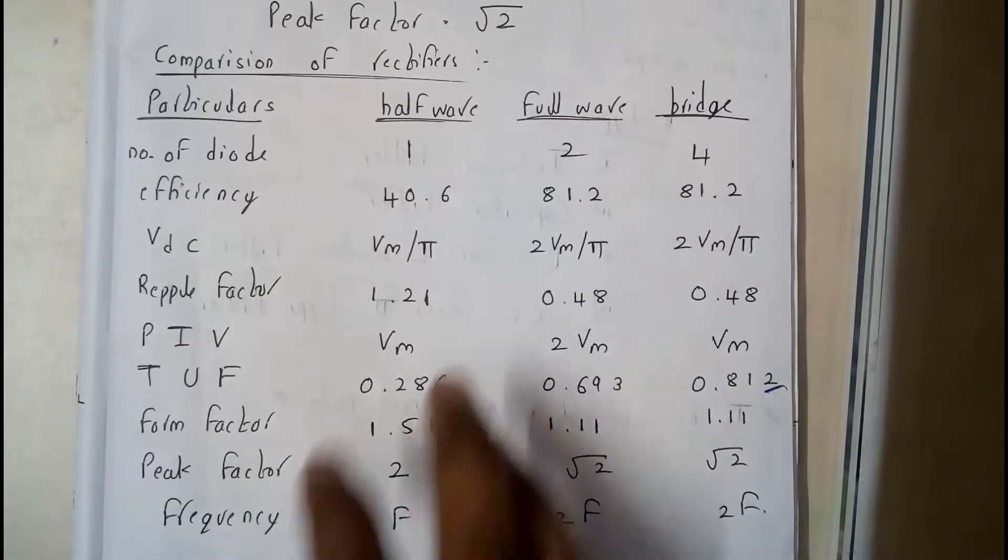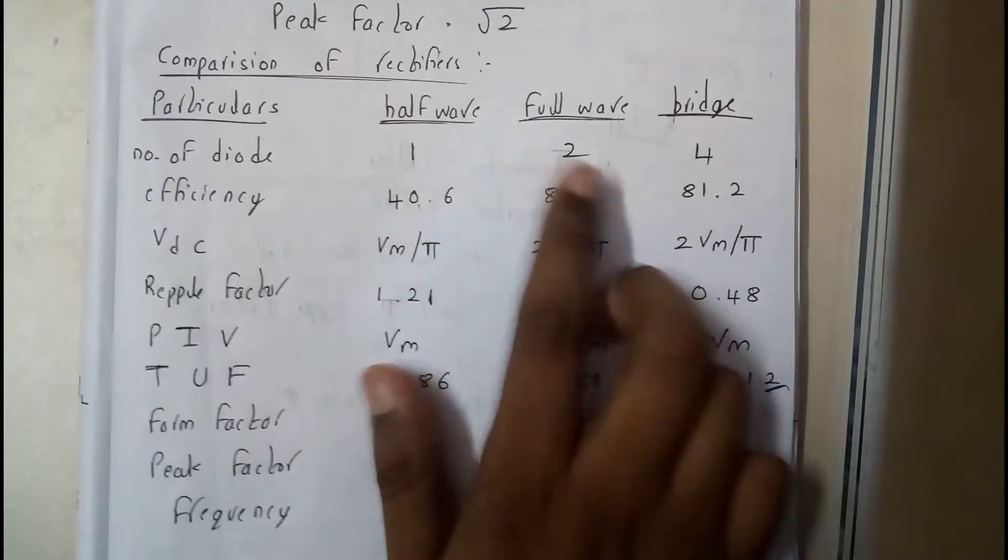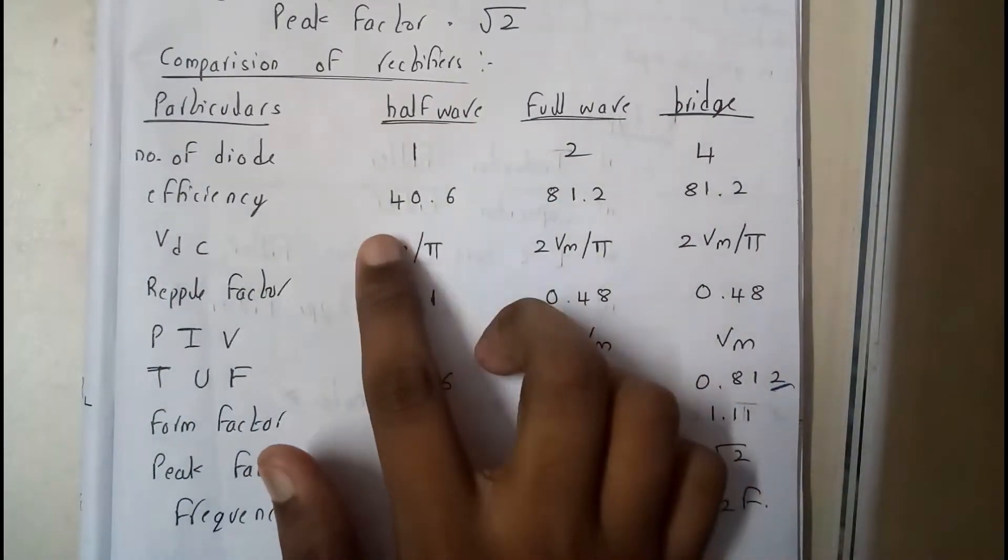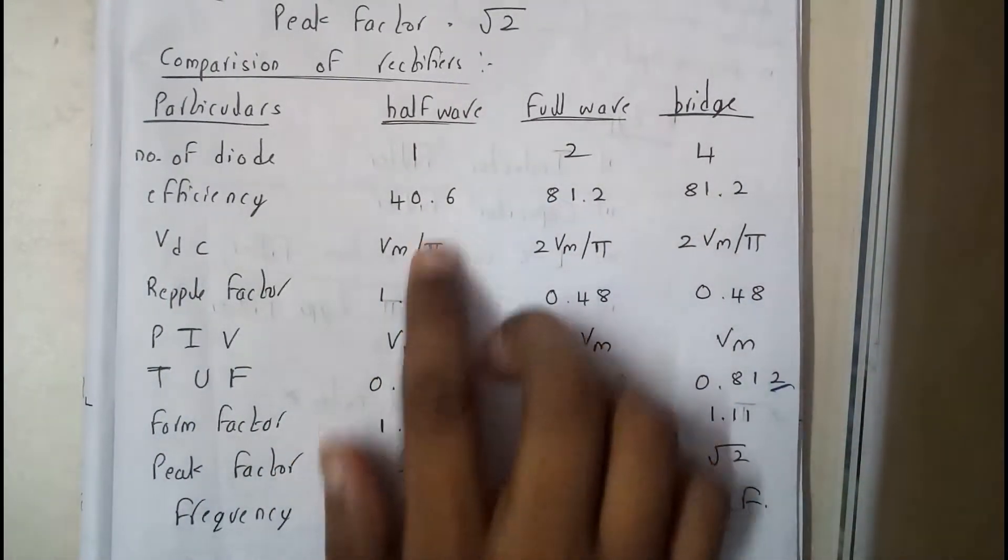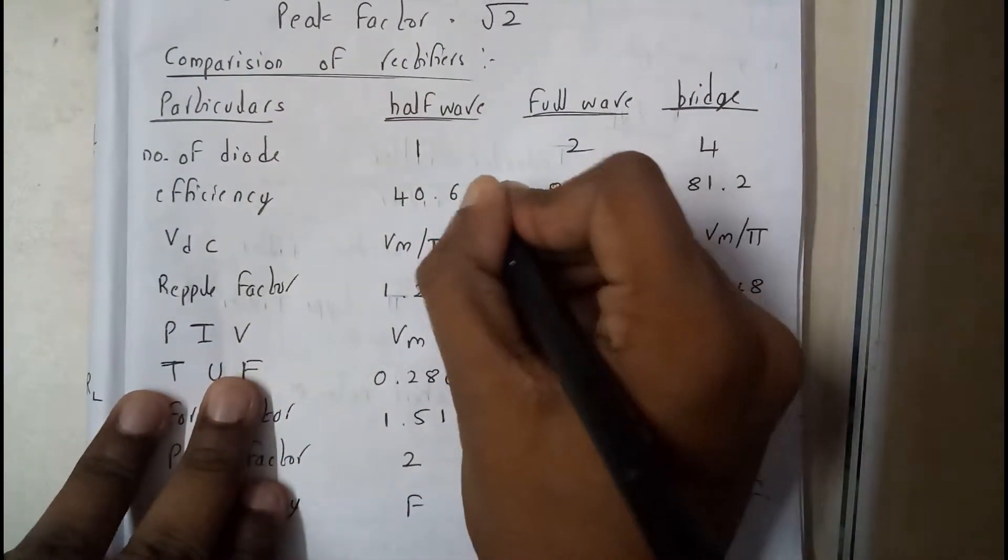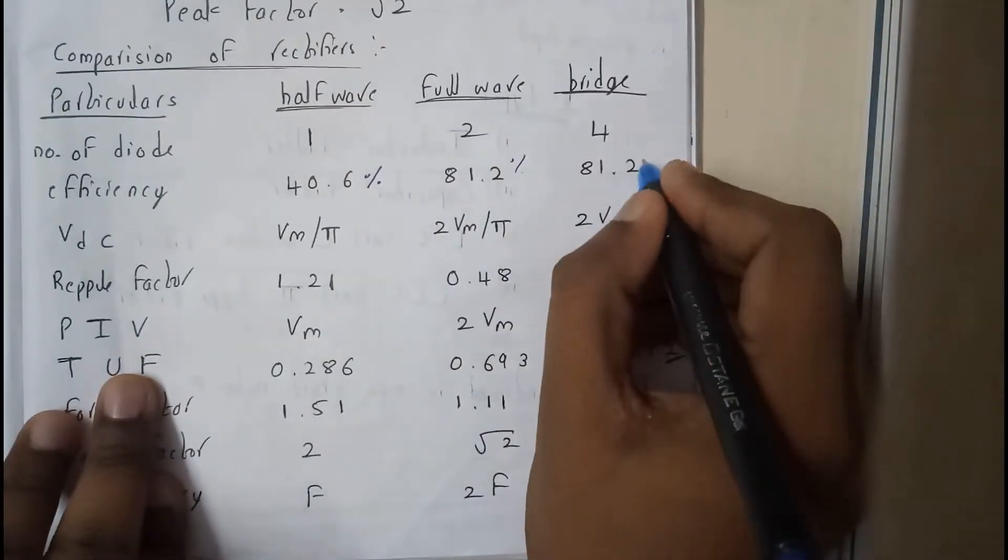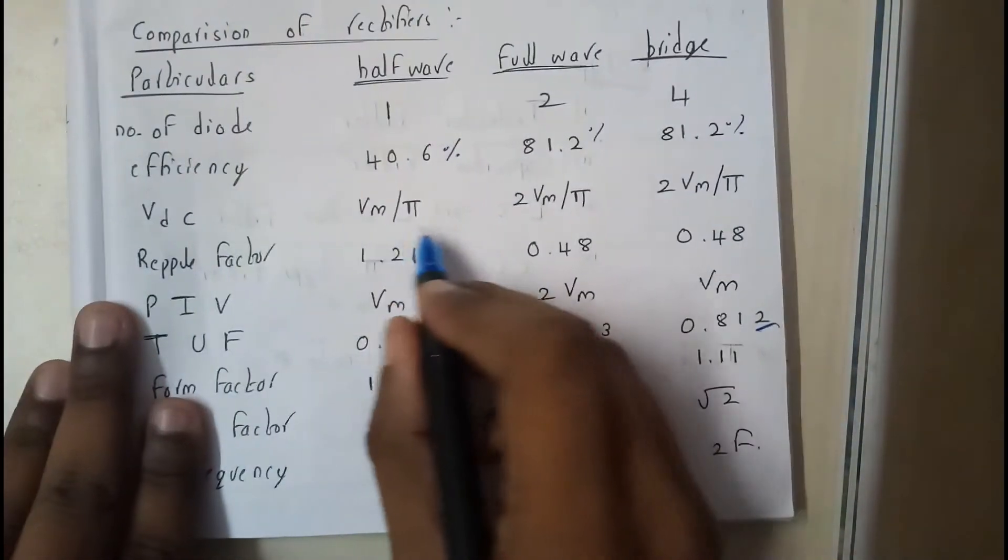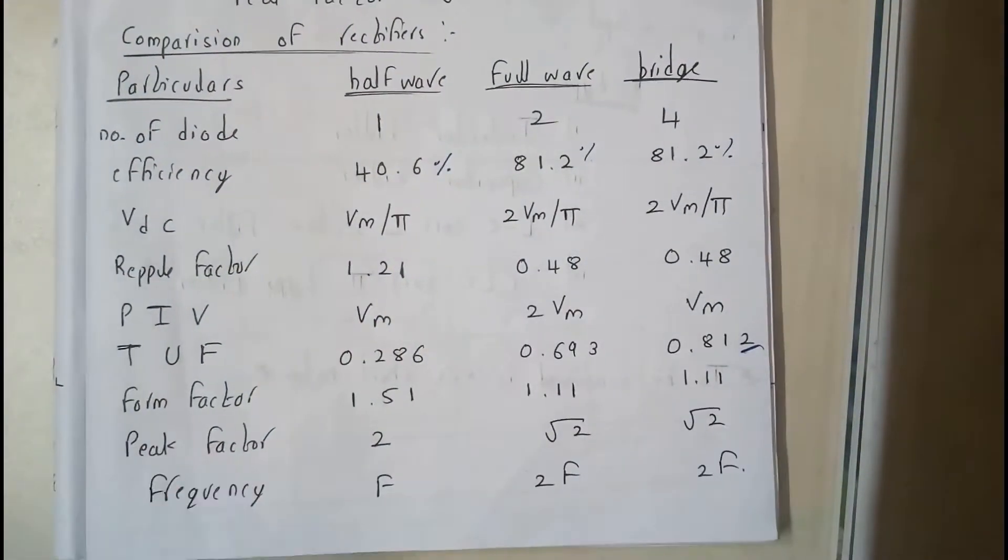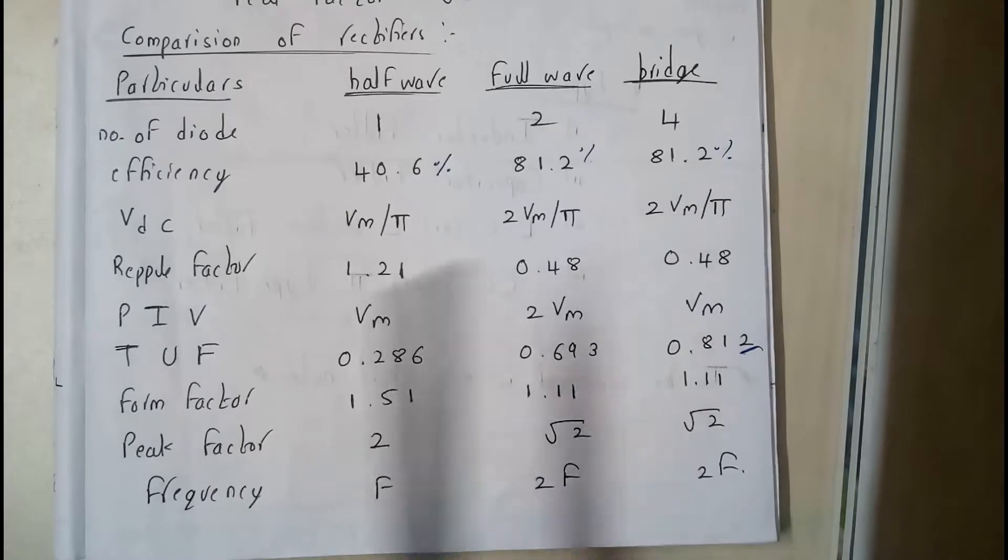Stay tuned to learn everything. Number of diodes: 1, 2, 4. Efficiency: 40.6%. VDC equals Vm/π, full wave 2Vm/π, 2Vm/π.